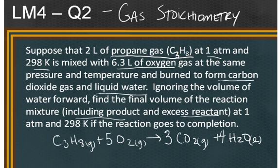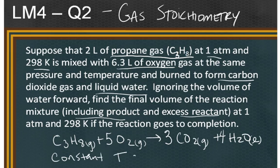So the balanced equation reads: 1 mole of propane reacts with 5 moles of oxygen to give 3 moles of carbon dioxide and 4 moles of water. We are at constant temperature and pressure because the problem specifies we are at constant temperature and pressure.